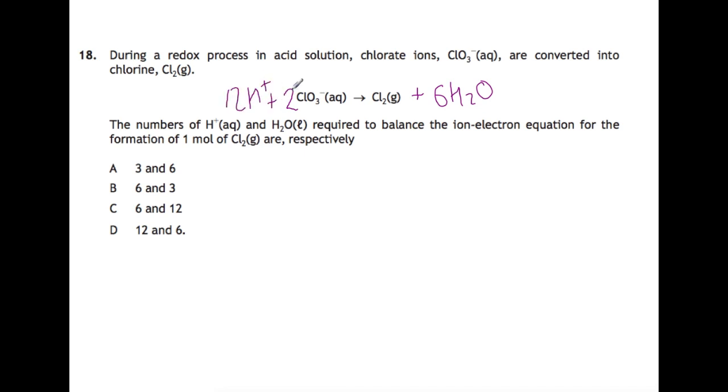So we put 12 H+ over here, and then if we needed to, we would balance off the electrons. So there's no charge on the right-hand side, and we have 12 plus minus 2, which is 10 plus on this side, so you would need 10 electrons to balance in total. The question is very specific: it wants the number of H+ first, which is 12, and then H2O, which is 6, so the answer is D.